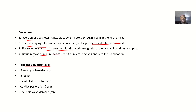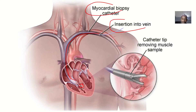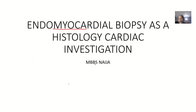Risks and complications include bleeding or hematoma, infections, heart rhythm disturbances, and cardiac perforation, which is rare. It could also lead to tricuspid valve damage, because the catheter passes down through the valve. So damage to the tricuspid valve is a recognized complication of endomyocardial or myocardial biopsy as a histological method of cardiac investigation.